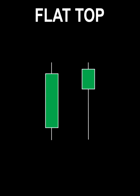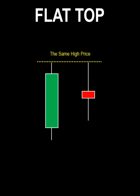The flat top pattern occurs when the highs of two candlestick charts are the same. It doesn't matter what color the real body is, how long the real body is, or whether there are shadows.